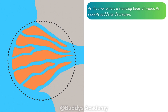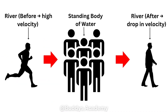So how does a delta actually form? As your river enters a standing body of water, its velocity is going to suddenly decrease. I like to explain this with an analogy — imagine you are running towards a group of people that are standing still. Once you reach the group, are you going to be able to continue running, or will you have to slow down and move through them slowly in order to pass?